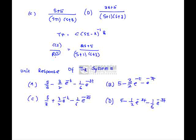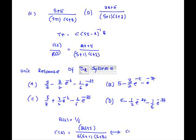C(s)/R(s) is the transfer function. For unit step response, R(s) = 1/s, so C(s) = (2s + 5) / [s(s + 1)(s + 3)]. Applying inverse Laplace transform, we get C(t) = 5/3 - (3/2)e^(-t) - (1/6)e^(-3t), which is option A.